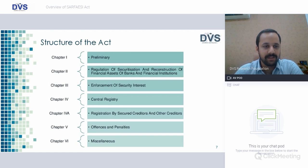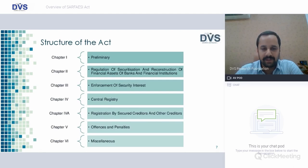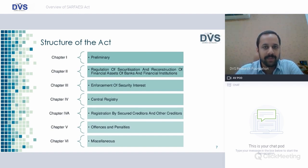Structure of the Act contains six chapters. Chapter 1 discusses the Preliminary. Chapter 2 covers Regulation. Chapter 3, Enforcement of Security Interest. Chapter 4 speaks about Central Registry, and Chapter 4A, which was recently notified in January 2020, discusses registration by secured creditors and other creditors. Chapter 5 covers offenses and penalties, and Chapter 6 covers miscellaneous provisions.